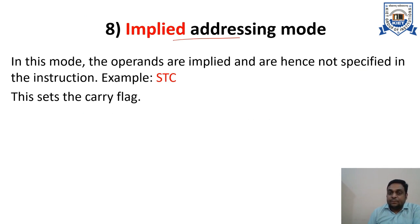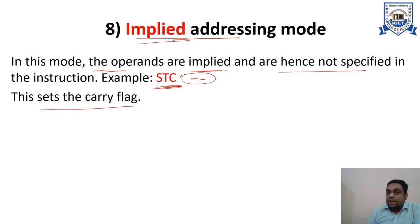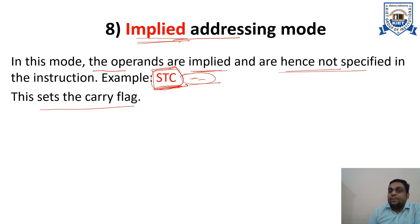Next is implied addressing mode — the last addressing mode we will discuss in 8086. In this addressing mode, the operands are implied or defined within the instruction itself. For example, STC (set carry) sets the carry flag; no other operand is specified and no external operand is needed. Such instructions follow the implied addressing mode — the operands are implicitly defined, already mentioned in the instruction itself. There is no need to define any external operand or its address.